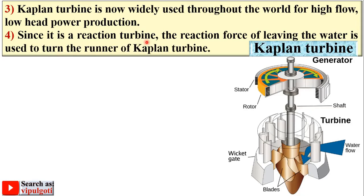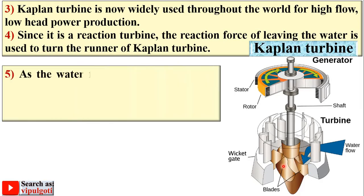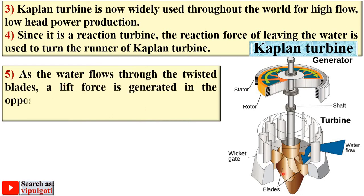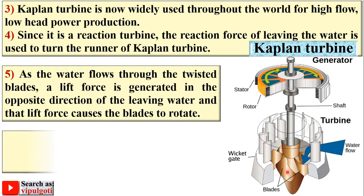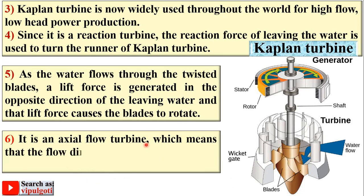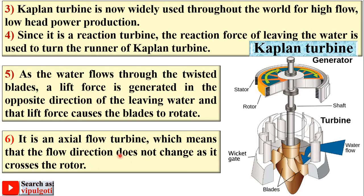Since it is a reaction turbine, the reaction force of the leaving water is used to turn the runner. As the water flows through the twisted blades, a lift force is generated in the opposite direction of the leaving water, causing the blades to rotate. It is an axial flow turbine, which means the flow direction does not change as it crosses the rotor — axial means parallel to the axis of the shaft.